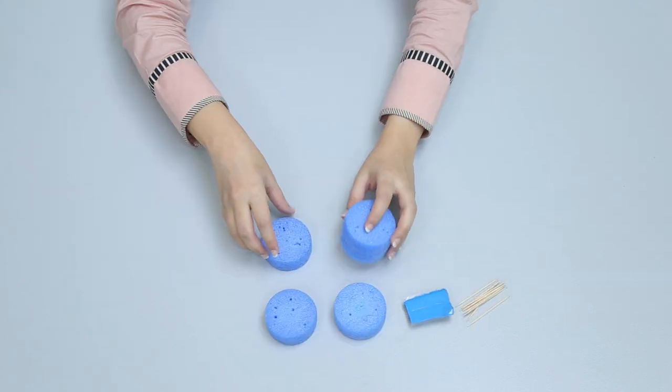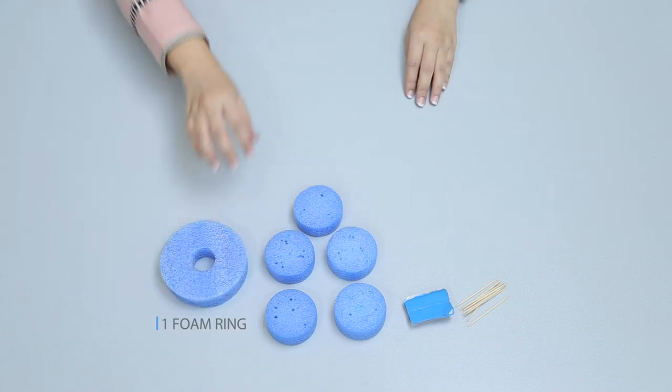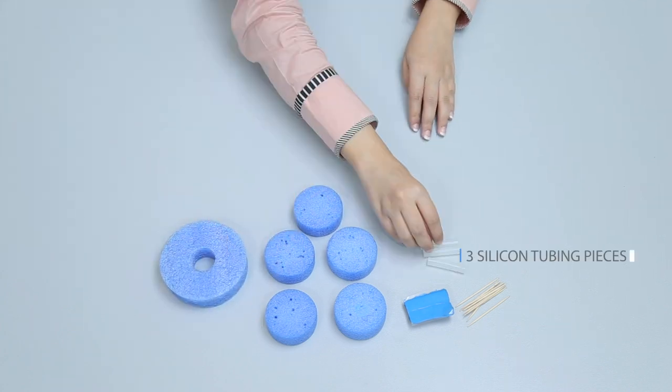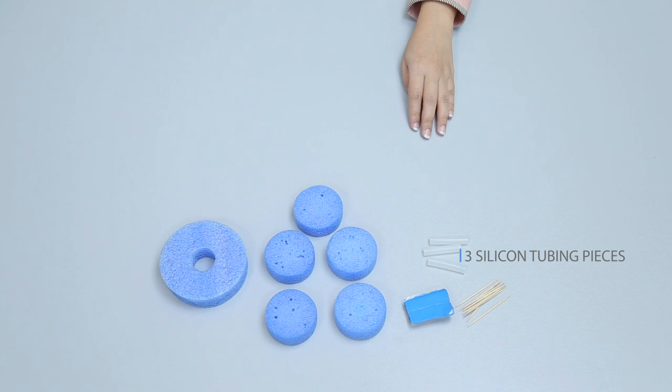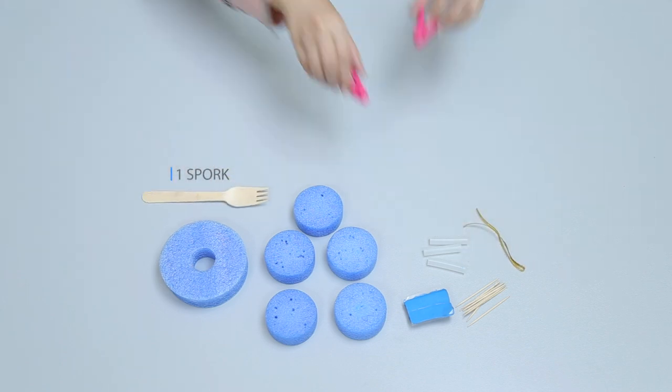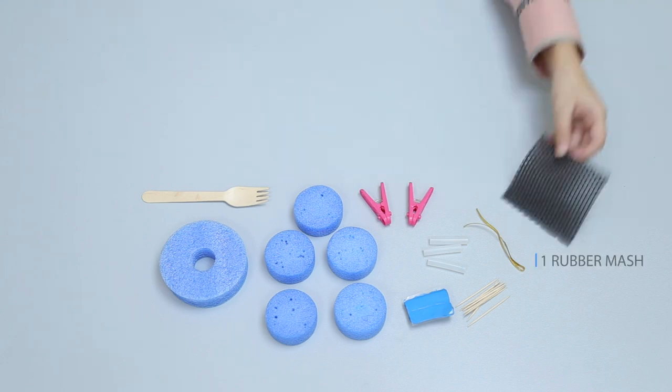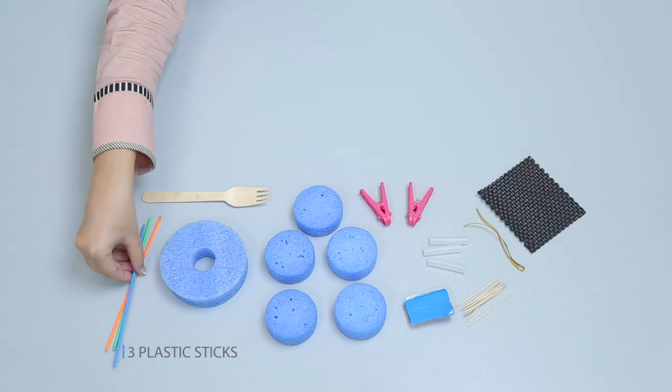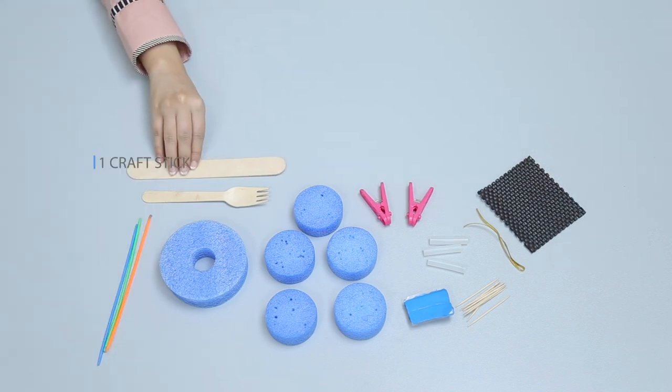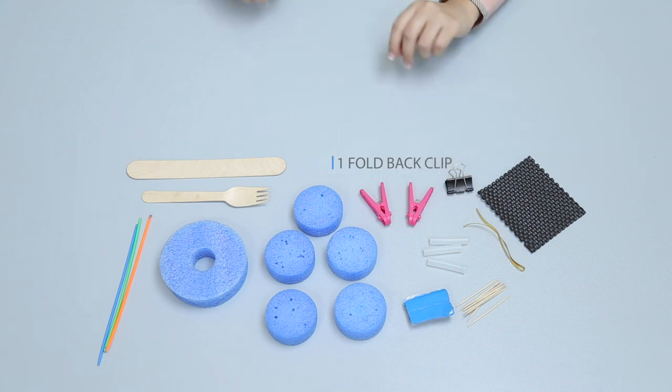For this project we will use 12 toothpicks, two sticky tacks, five foam wheels, one foam ring large with hole, three silicone tubing pieces, one tie wire, one sport, two bags, one rubber mesh, three plastic sticks, one craft stick, and one foldback clip.